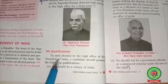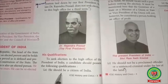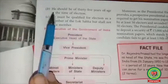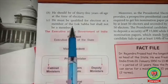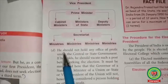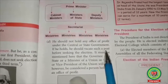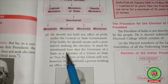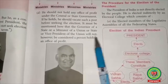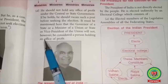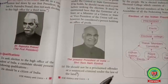His qualifications: to seek elections to the high office of the President of India, a candidate should possess the following qualifications. He should be a citizen of India, at least 35 years of age at the time of election, and must be qualified for elections as a member of the Lok Sabha but shall not be a member. He should not hold any office of profit under the central or state government. Note that the governor of a state, a minister of a union or state, or the Vice President will not be considered a person holding an office of profit. He should not be a proclaimed offender or a sentenced criminal.